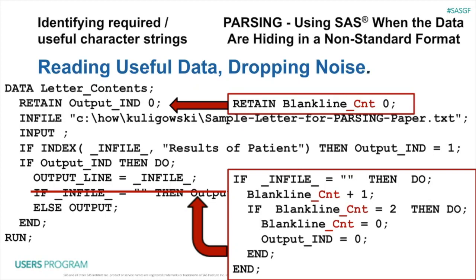We are going to make a few changes to the code. Where we have retain output indicator 0, we are going to add a second variable: retain blank_line_CNT, and we're also going to set that to 0. Then, down towards the end of the code, where we're watching for the presence of a blank line in the end file, instead of just outputting the line and changing the code to say 'stop recording,' we are going to put a whole if statement in there. We are going to keep track of our blank lines. We're going to increment it either way. And if the blank line count is 2, then we get the second blank line — that's the point where we are done. Let's set the indicator to 0 and let's stop recording.